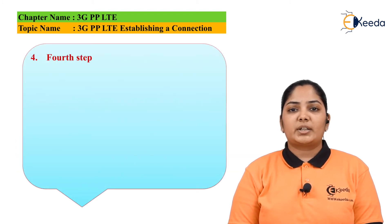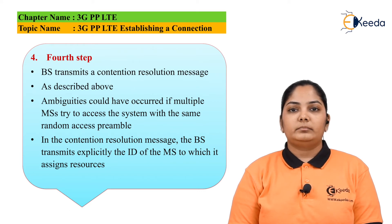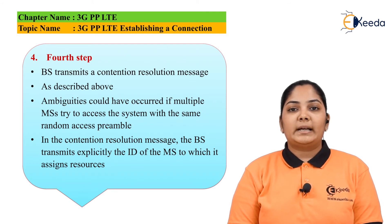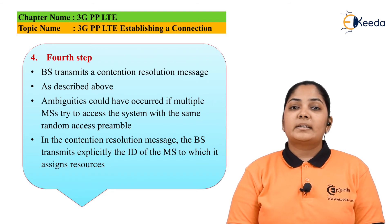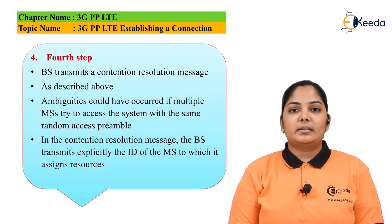If it is a fresh connection for the first time, then all the information is required. If it is a re-established connection, then less information is required. The contention resolution message is a message sent for disagreement resolution — regarding which mobile is trying to access. Ambiguities could have occurred if multiple mobiles tried to access the system with the same random access preamble. In this resolution message, the base station transmits exclusively the ID of the mobile station to which it assigns the resources.